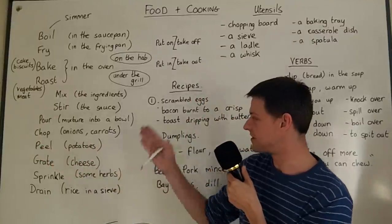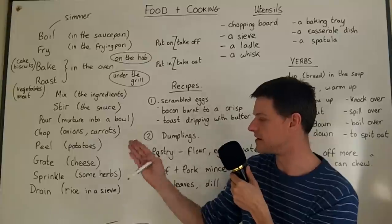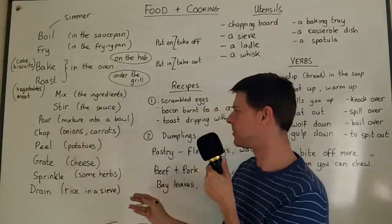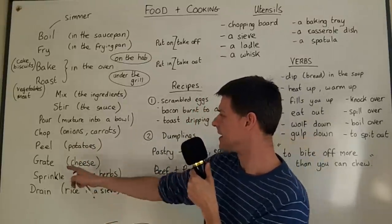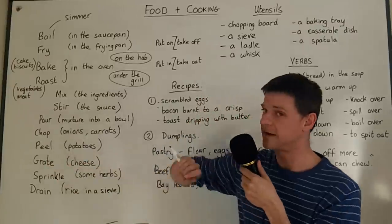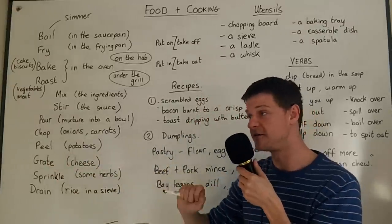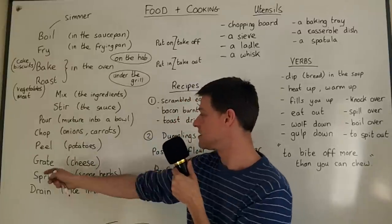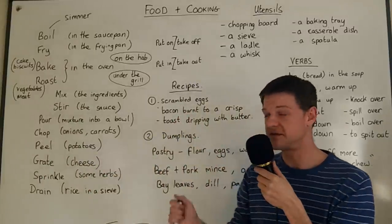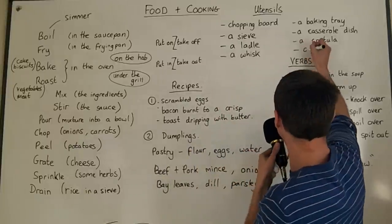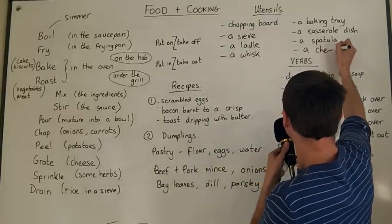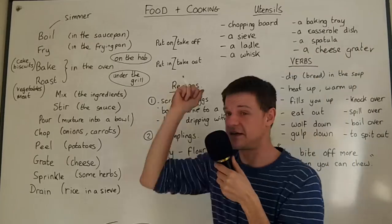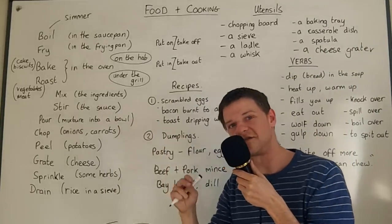You can chop onions and carrots — that means cutting with a hard, fast motion. We normally say 'cut the bread' but 'chop onions' or 'chop carrots.' You peel potatoes, which means peel the skin off the vegetable. You grate the cheese using a cheese grater — you take the grater and make the cheese into little bits.